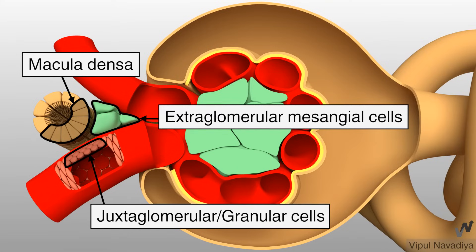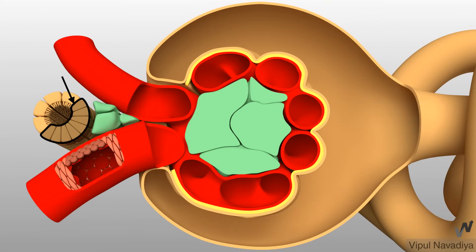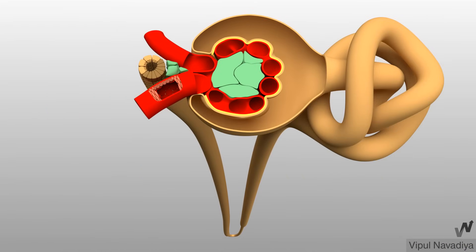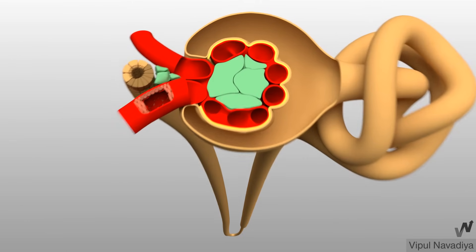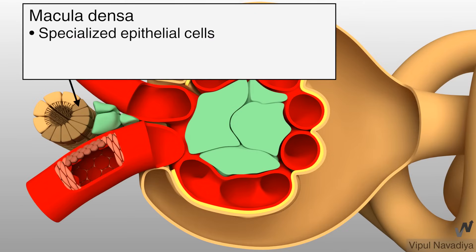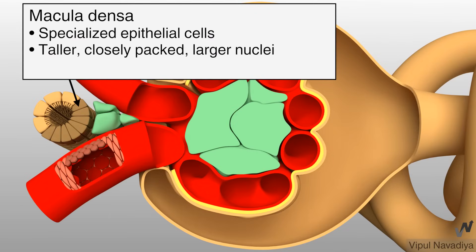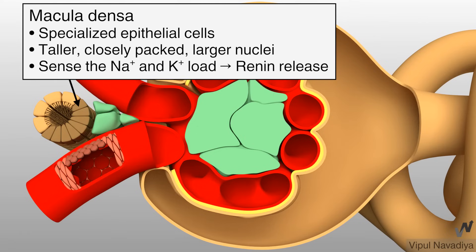Now we will see them one by one. First, macula densa cells. While studying the renal tubule, we saw that the ascending limb of the Loop of Henle passes in between the afferent and efferent arterioles of the same nephron. Here, the macula densa cells are located closer to the afferent arteriole. They are specialized epithelial cells — taller, more closely packed, and have larger nuclei than the rest of the epithelium. Because of this, they have a plaque-like appearance. They sense the sodium and potassium load in the luminal fluid and cause secretion of renin from granular cells accordingly.